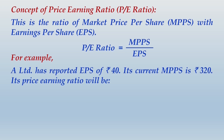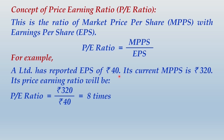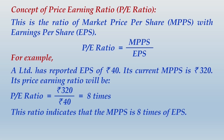For example, A Limited reported EPS of ₹40 and current market price per share is ₹320. PE ratio = 320 ÷ 40 = 8 times. In this scenario, current market price is compared with current EPS. This ratio indicates that MPPS is 8 times EPS, and this becomes the PE multiplier.